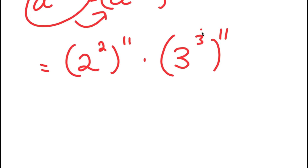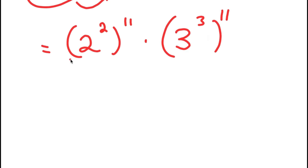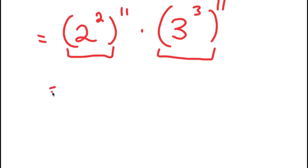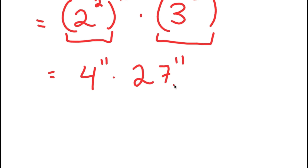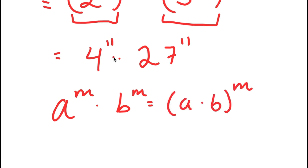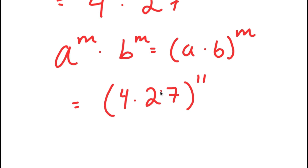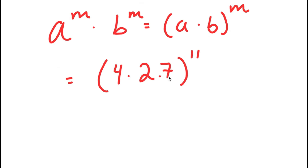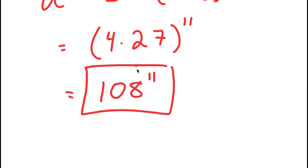I'm going to simplify what's in the parentheses. I have 2 squared in the parentheses, which is equal to 4, giving me 4 to the power of 11. And 3 cubed is 27, giving me 27 to the power of 11. Now, if I have something in the form a to the power of m times b to the power of m, this is equal to a times b to the power of m. So 4 to the power of 11 times 27 to the power of 11 equals 4 times 27 to the power of 11. 4 times 27 equals 108, so I have 108 to the power of 11. This is my final solution.